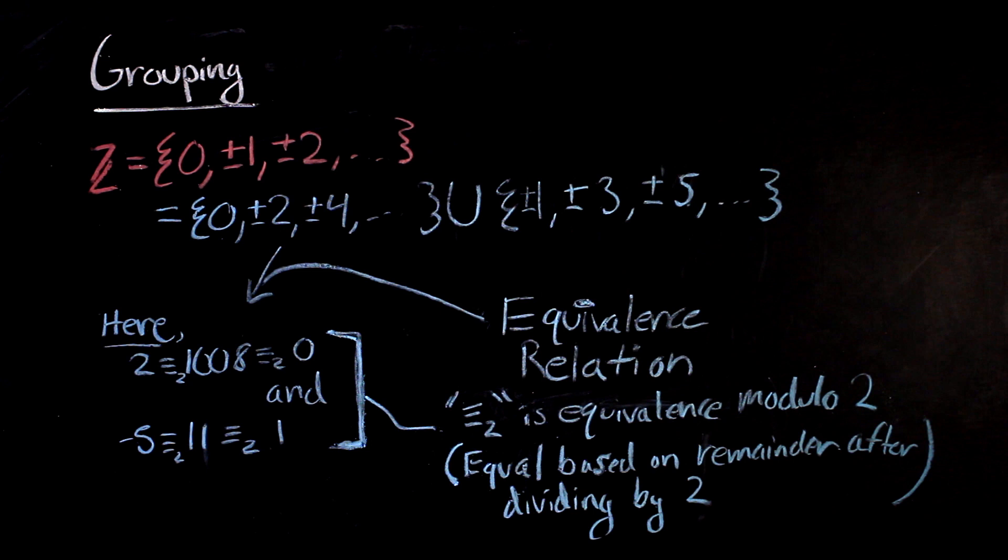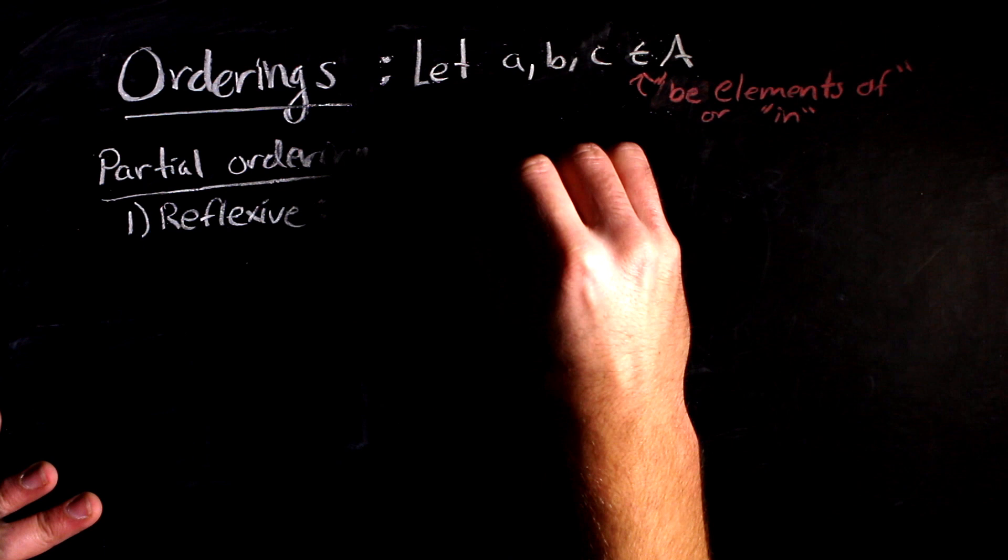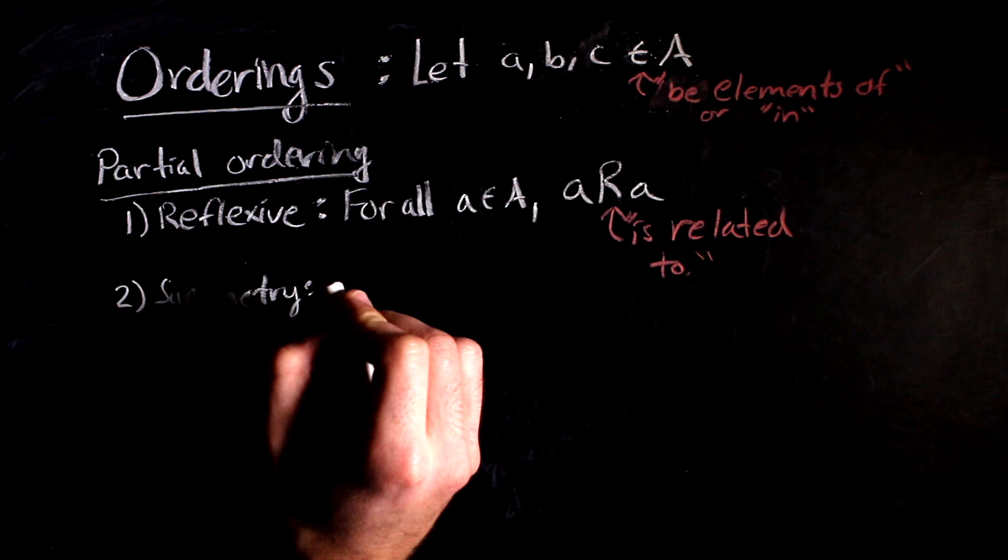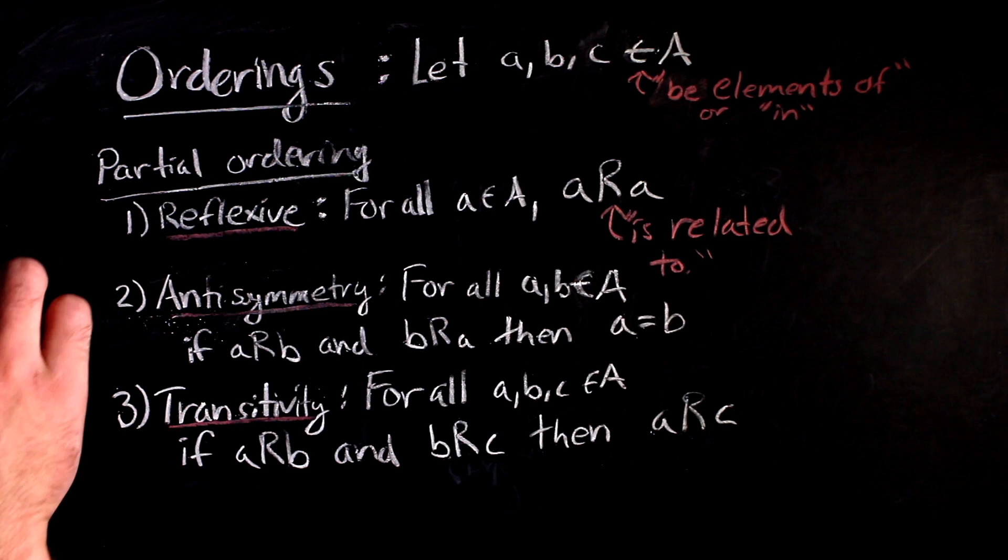Now let's move on to orderings. The two we will talk about are partial orderings and total orderings. Let A, B, and C be in our set A. A partial ordering has three properties. It is 1. Reflexive, meaning that everything in the set is related to itself. 2. Antisymmetric. If A is related to B and B is related to A, then A equals B. And lastly, 3. It is transitive. That is, if A is related to B and B is related to C, then A is related to C.